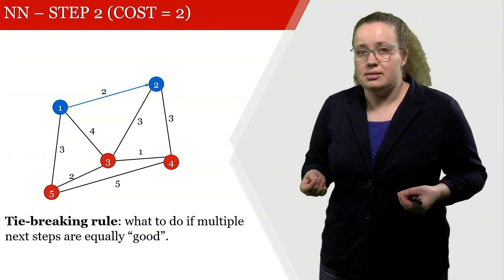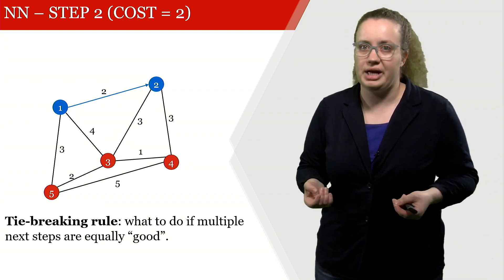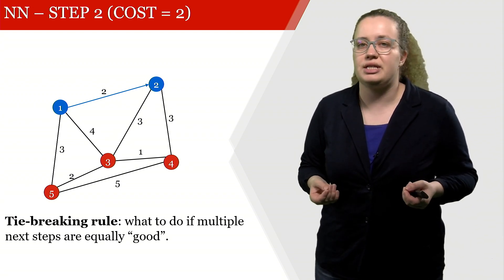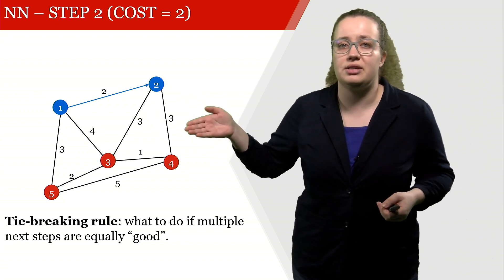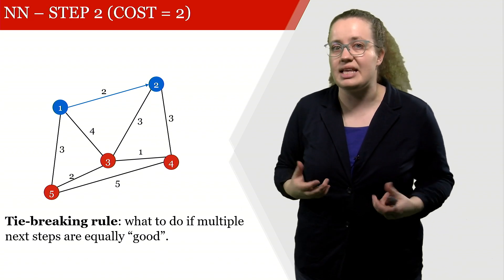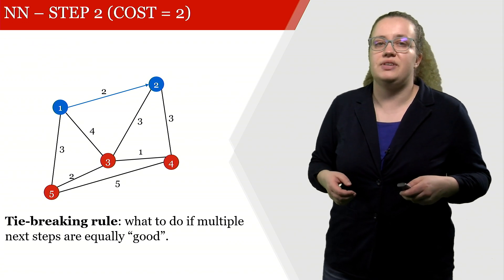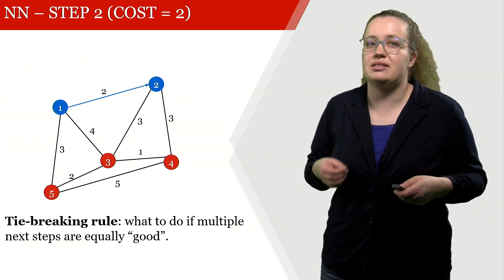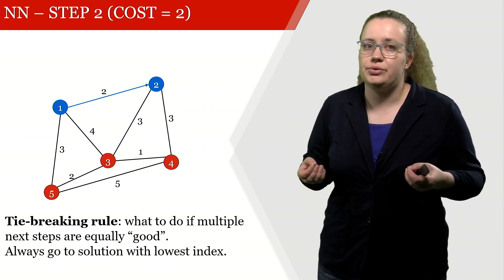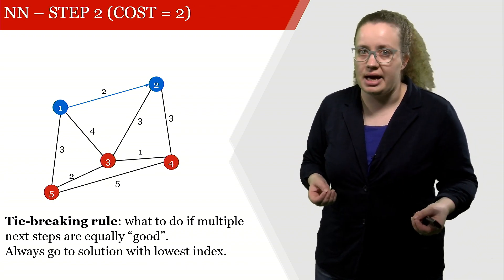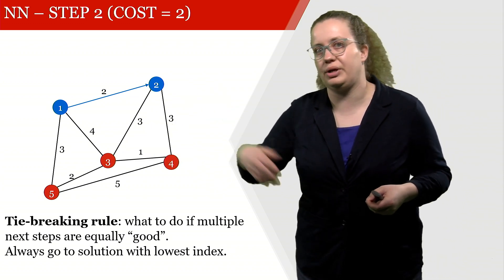This is where we need a tie-breaking rule. A tie-breaking rule tells us what we have to do if multiple steps are equally good. In this case, this one here and this one here clearly are the same. What we're saying right now is we're always going to the node with the lowest index. So we compare this 3 with this 4 and we decide to go to the 3 first.